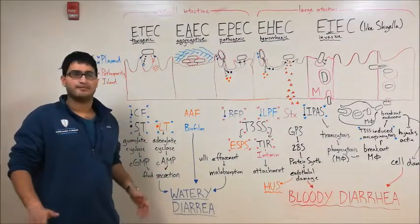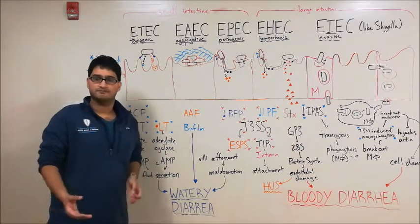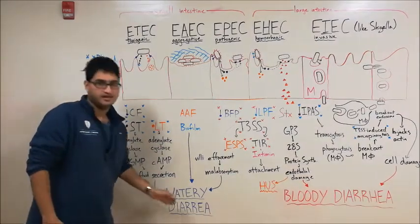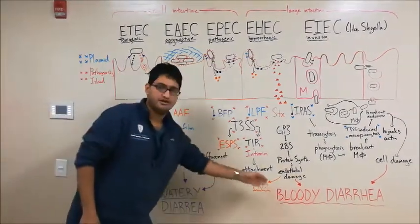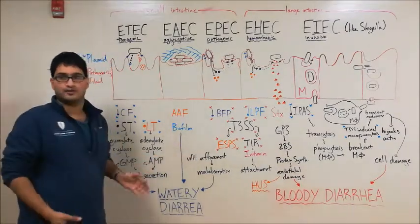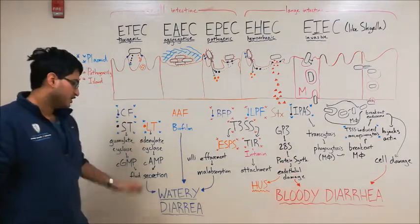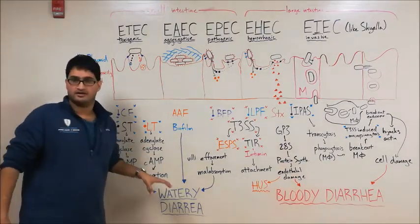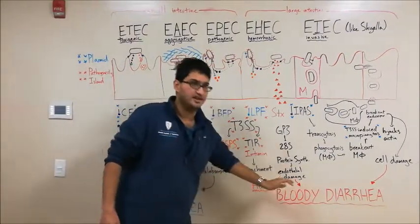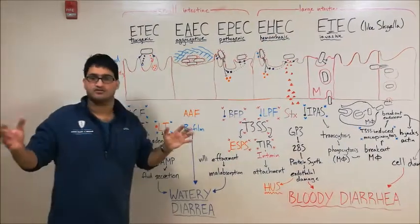Before I start talking about each individual strain of E. coli, I want to lay out a framework. The E. coli can broadly be divided into strains causing watery diarrhea and strains causing bloody diarrhea. Thankfully, those two types of diarrhea also correspond to the locations where these E. coli tend to colonize. The strains that cause watery diarrhea tend to colonize the small intestine, whereas the strains that cause bloody diarrhea tend to colonize the large intestine.